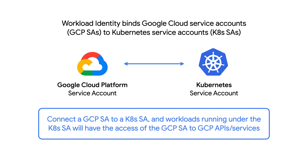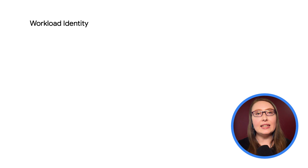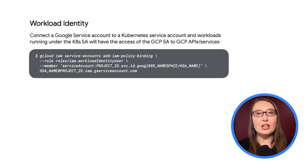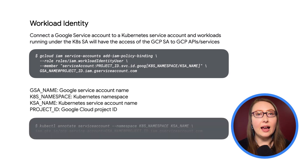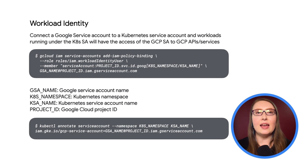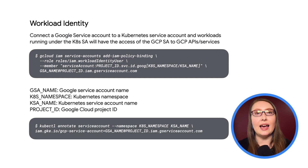Workload identity provides granular control, offering just the right permissions to a particular workload, rather than to, for example, a whole compute node or a whole cluster, which may have multiple workloads running on them that don't need the same level of access. You would configure workload identity using something similar to the two commands shown here. The first command uses the gcloud tool to make a call to the GCP APIs to create a policy binding, granting the Kubernetes service account access to act as the associated Google Cloud service account. The second command uses the kubectl tool to use Kubernetes APIs to annotate the Kubernetes service account with the name of the Google Cloud service account it will act as.